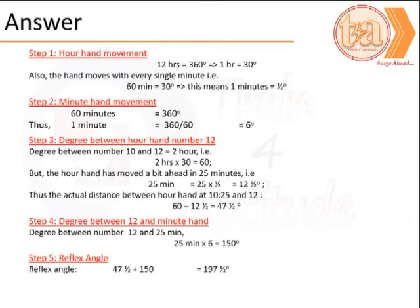The next step is to calculate the distance between 12 o'clock, or the numeral 12, and the minute's hand position, that is 25 minutes. So we have 25 minutes into 6 degrees for every minute, that is 150 degrees.